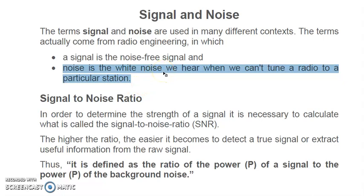If you listen to radio on your mobile or a radio receiver set, and you are not tuning the channel properly — say the Vividh Bharati station is at 100.8 MHz, but you have tuned to 100.6 MHz or 101 MHz — then you will hear some unclear sound. That is called white noise. That unclear, interrupted signal when we cannot tune a radio to a particular station is considered as noise.